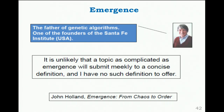The father of genetic algorithms, who is also one of the founders of the Santa Fe Institute, says that emergence is unlikely to submit to a concise definition — and he says 'I have no such definition to offer.' My experience is that many things to do with complex systems don't have yet a very precise definition. We should just adopt it or discard it according to our needs. We are not complex system scientists — at least not yet. We are just telecommunication engineers trying to look for a possible tool to solve some of the problems we have, and to some extent this has been successful so far.